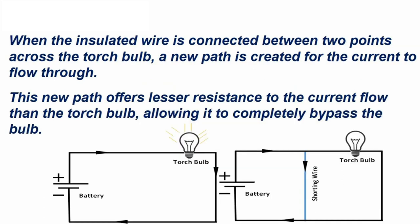Now, when the insulated wire is connected between two points across the torch bulb, a new path is created for the current to flow through. This new path offers lesser resistance to the current flow than the torch bulb, allowing it to completely bypass the bulb. That means the current takes another path to flow.